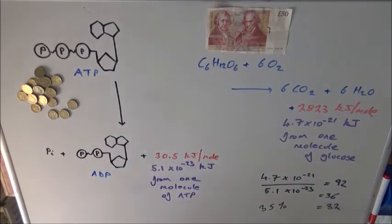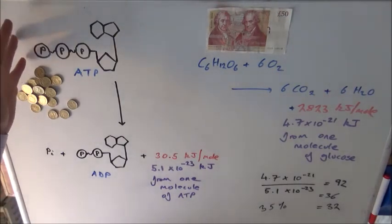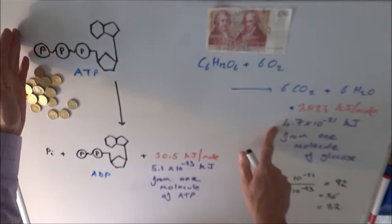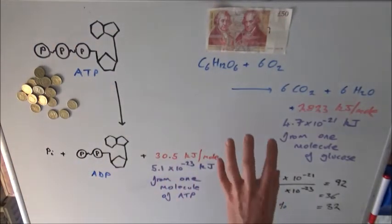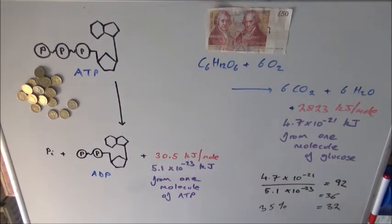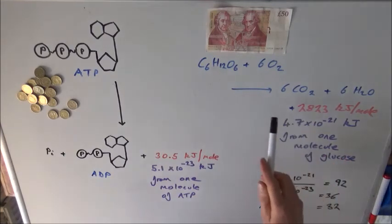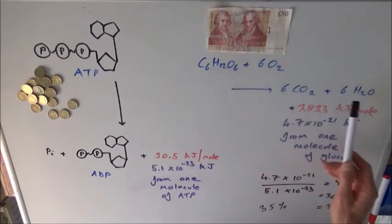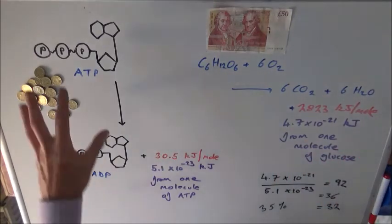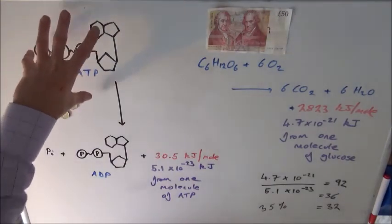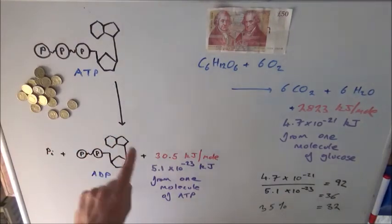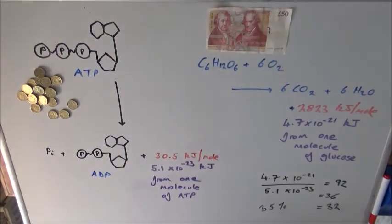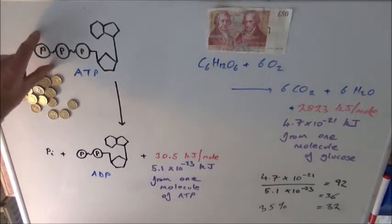Why does a molecule of ATP release only 5.1 × 10⁻²³ kilojoules — much less than a glucose molecule? One reason is that when you break down glucose in respiration, you break it down completely: all the carbons are oxidised to CO₂ and all the hydrogens are oxidised to H₂O — that's like a complete combustion reaction. With ATP, the cell is not combusting or breaking it down completely. It's only taking the energy available when you break off the end phosphate group — the phosphoryl group.